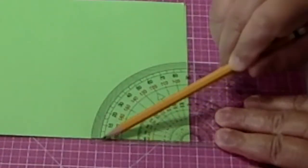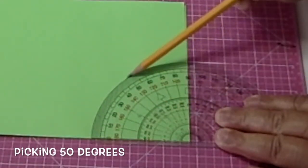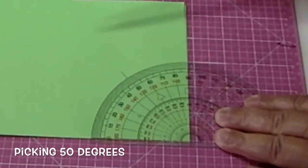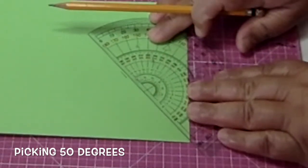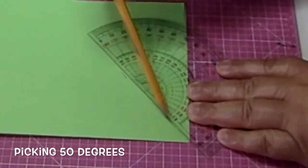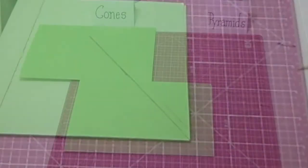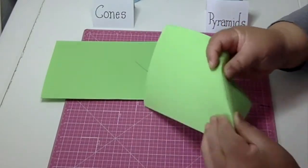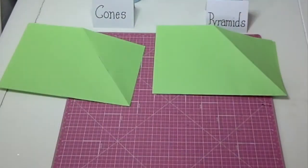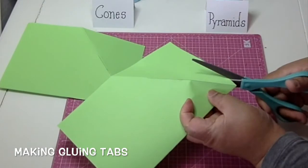So setting the protractor at the same spot, I'm going to pick an angle less than 90 degrees, in this case 50 degrees, and then make a line from the point to that mark. I'll pinch along the line to make a fold and about a half an inch to the right of that, I'll make a cut for my gluing tabs.